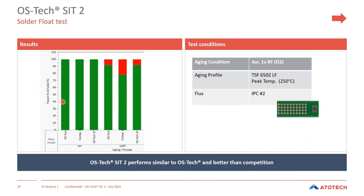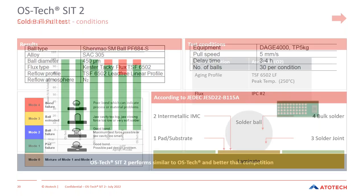A solder flow test was done using test coupons with through-holes, checking solder penetration through the PTHs up to the surface. Comparing our standard OSP with the SIT and other processes in the market, we see that we can achieve the same performance as existing processes — sometimes even better. It passes all requirements in terms of solder wetting performance.